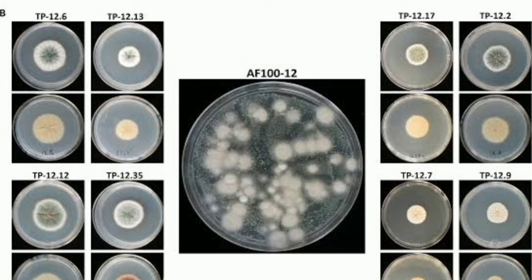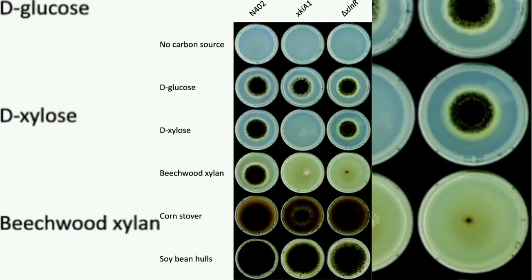Aspergillus commonly grows on carbon-rich substrates like polysaccharides and monosaccharides. It is a common contaminant of starchy foods, i.e. bread, cereals, etc. Mainly the species demonstrate oligotrophy, being capable of growing in nutrient-depleted environments.